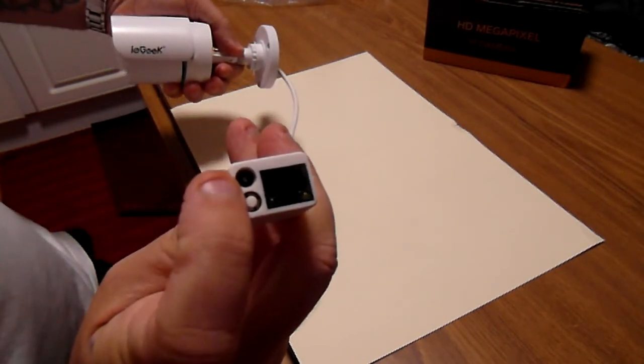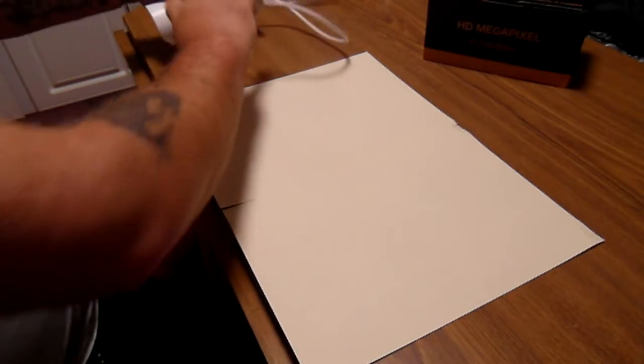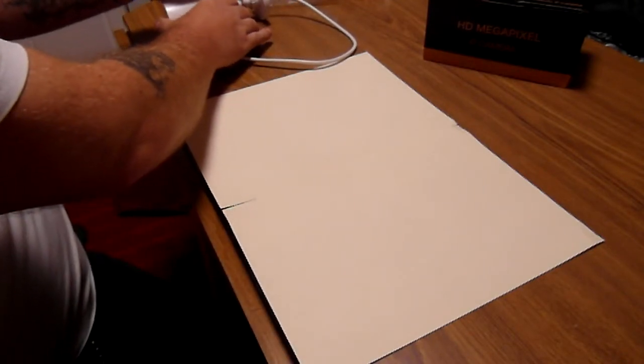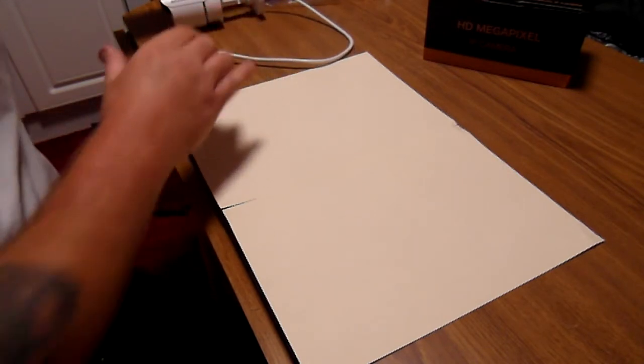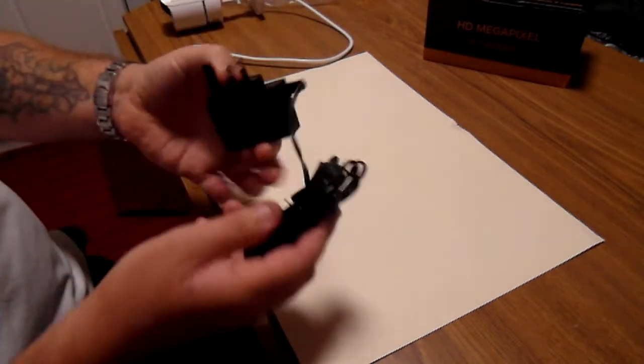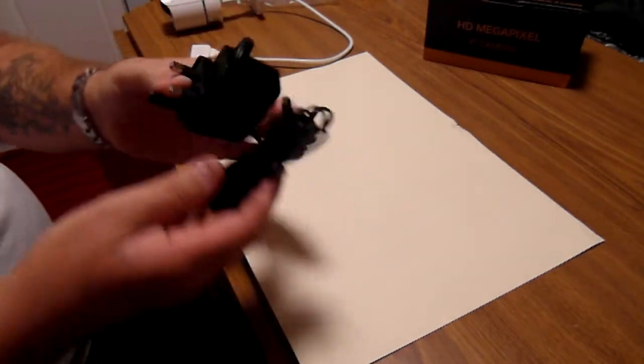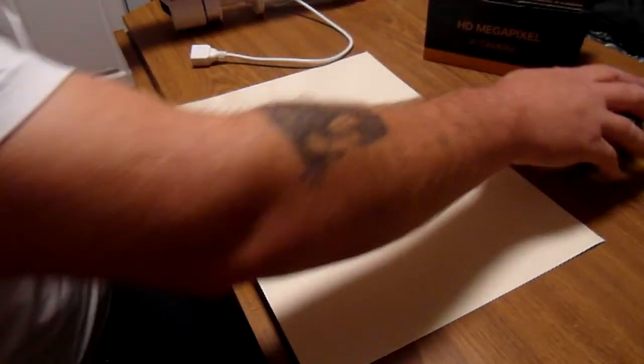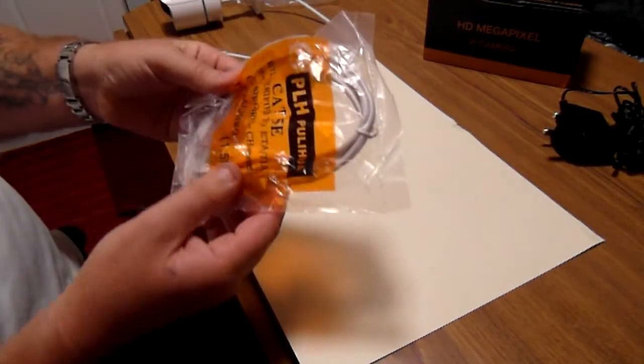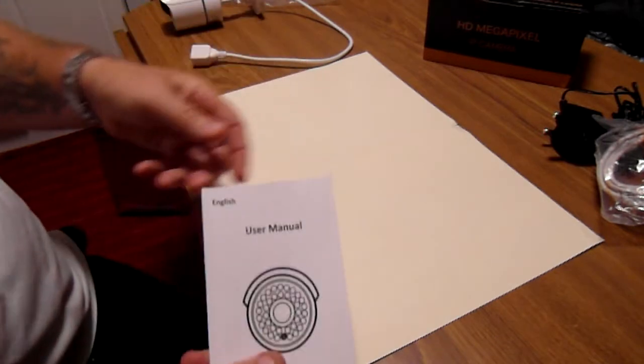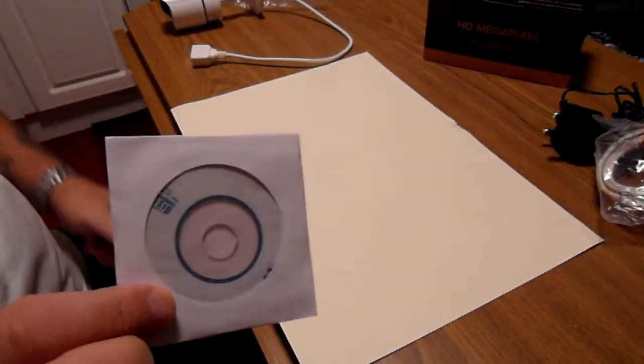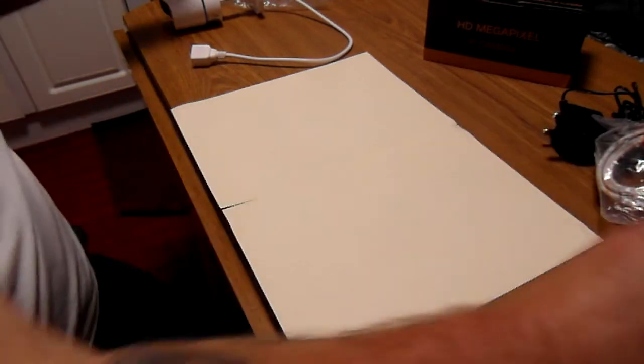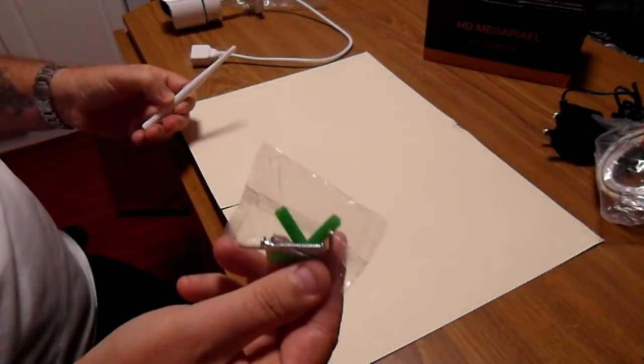In the box comes obviously a power lead, Ethernet cable, user manual plus the setup disc, some fixing screws, and the aerial.